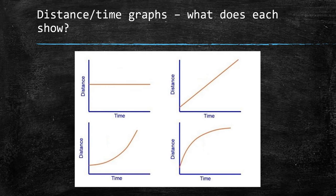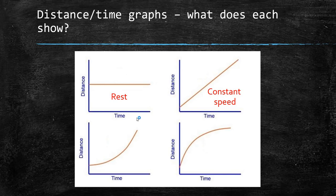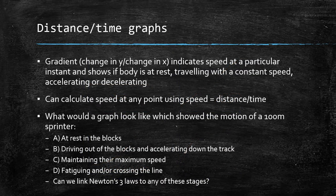Looking at these distance-time graphs, can you work out what each graph represents? The first graph shows distance remaining the same as time goes on — that represents rest. The second graph shows distance increasing as time goes on — that represents constant speed. The third graph shows distance increasing rapidly after a curve — that shows acceleration, they're speeding up. And the last one shows deceleration — they are slowing down as time goes on. The gradient — the change in y over the change in x — indicates the speed at a particular instant, showing if the body is at rest, travelling at constant speed, or accelerating or decelerating.